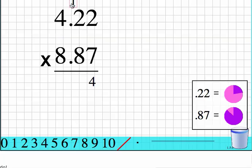And I'm going to carry the 1. 7 times 2 is 14. 14 plus 1 is 15. I'm going to carry the 1 one more time. 7 times 4 is 28. 28 plus 1 is 29. So I have my first row done.